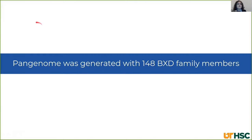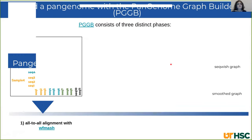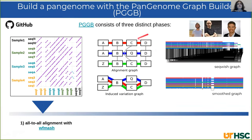I generated this pangenome with 148 BXD family members. To build the pangenome, I used the Pangenome Graph Builder, PGGB — a pipeline developed mainly by Eric, Andrea, and Simon. PGGB consists of three different steps.